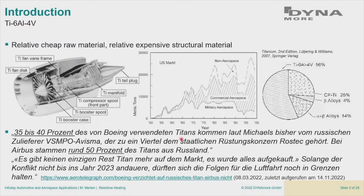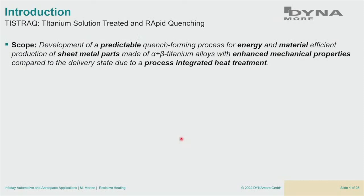In that context we are now with our research project, which follows the aim to develop a predictable quench forming process for energy and material-efficient production. Material efficiency is quite a hot topic when there is no material to buy on the market. As a forming engineer, we do that on sheet metal parts and want to enhance mechanical properties of this alloy during this process. The whole process is called T-STRAC — an acronym for Titanium Solution Treated And Rapid Quenching.